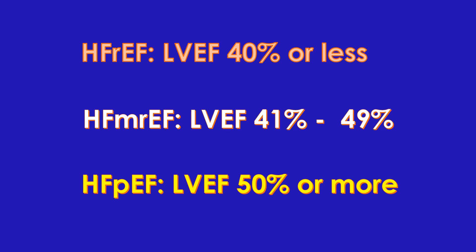Heart failure with preserved ejection fraction is with a left ventricular ejection fraction of 50% or more. In addition to quantitative reporting, normal left ventricular systolic function is often reported as good left ventricular function. Some report both ventricles together as good biventricular function. Left ventricular dysfunction may also be visually graded as mild, moderate and severe depending on the contraction of the left ventricle in general.